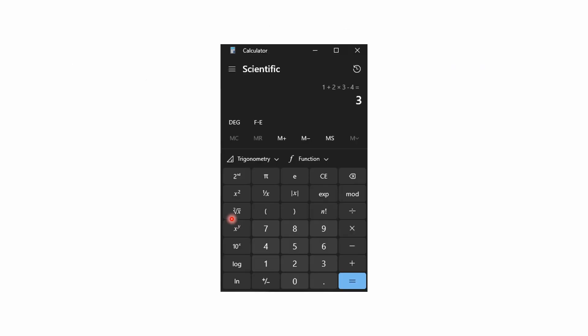You could double check that on a scientific calculator if you have a cell phone or scientific calculator. Or if you're using a Windows computer and you switch it to scientific mode, you can enter this equation in and get 3.